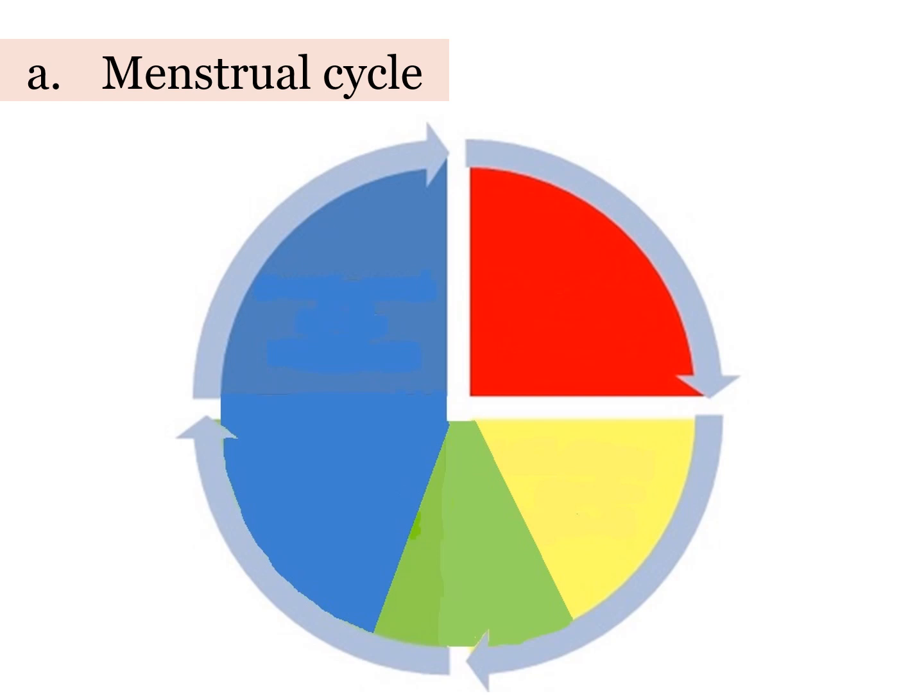Firstly, the menstrual cycle. This cycle is counted from the first day of period to the first day of the next period. Period, or its technical term menstruation, is the monthly discharge of blood experienced by females once they reach puberty. Menstrual cycle is not the same for every woman. Some women may have a regular 28-day cycle, and some may have an irregular cycle. Generally, there are four phases in the menstrual cycle.